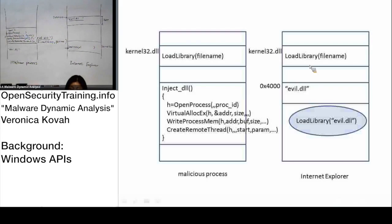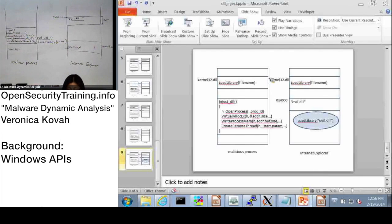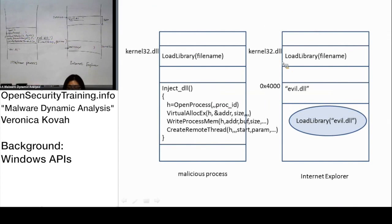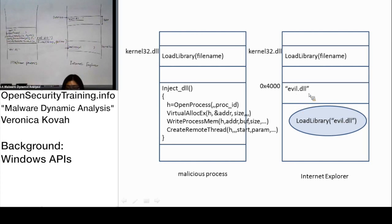When create remote thread is called, Windows creates a thread at the start address of load library. This is one example - the malicious process can specify a different code address, but it still specifies the address of evildll.dll. In the Internet Explorer's memory space, if the evildll.dll string has not been copied to its own memory space, it cannot access it. Internet Explorer has no reason to call open process or read process memory, because Internet Explorer is not supposed to look at other process memory - it's only for web browsing.